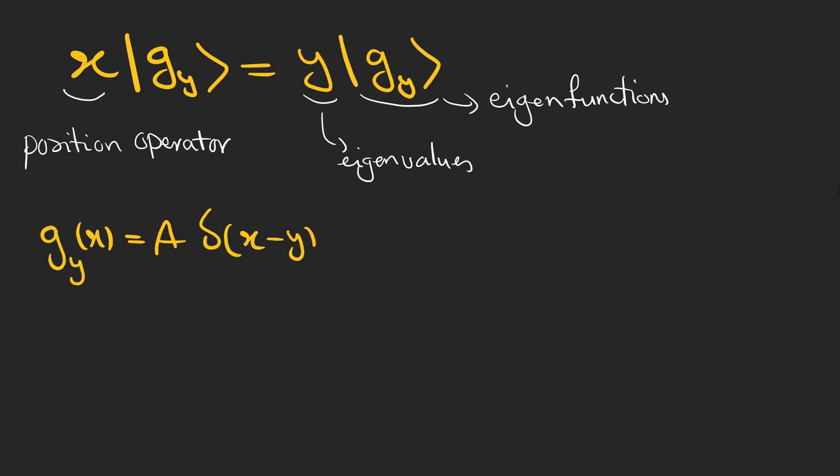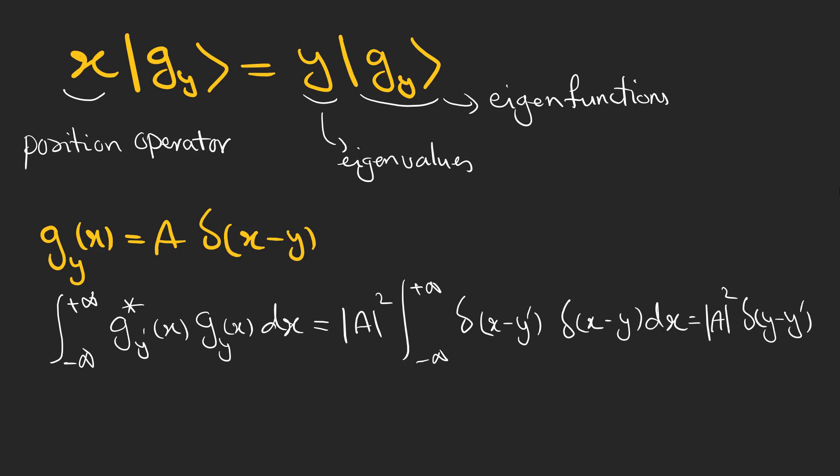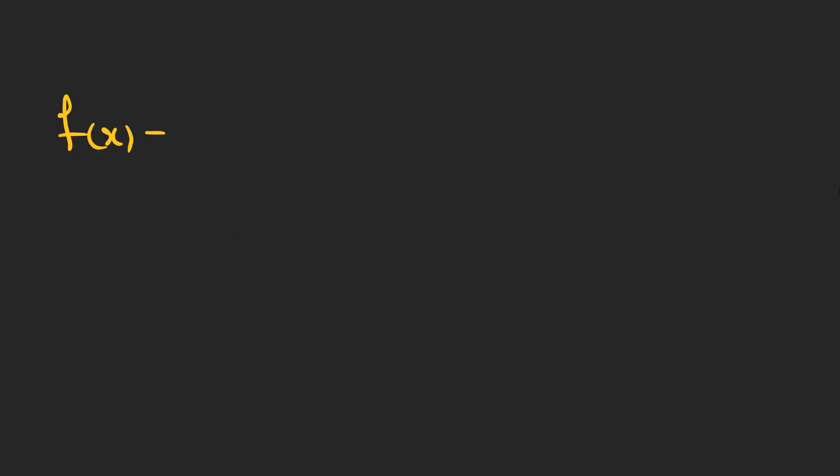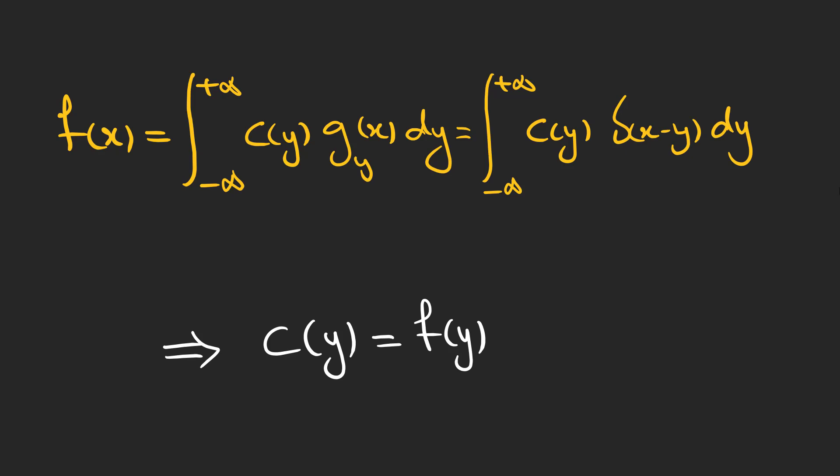So we can write the Dirac delta function to define the eigenstates which again are not square integrable but still orthonormal in a kind of way with real eigenvalues. They are also complete with these coefficients.